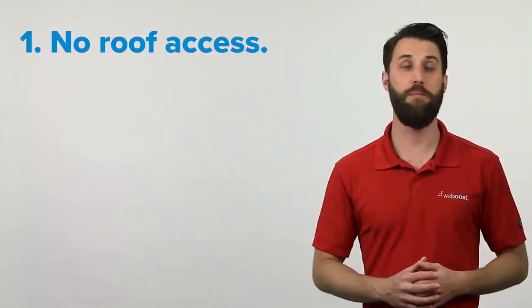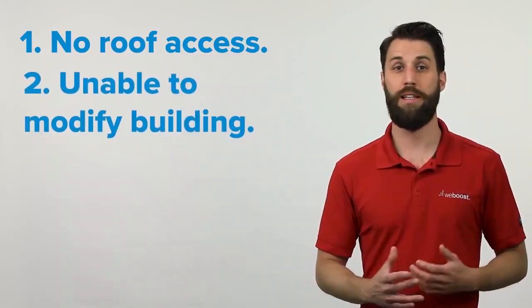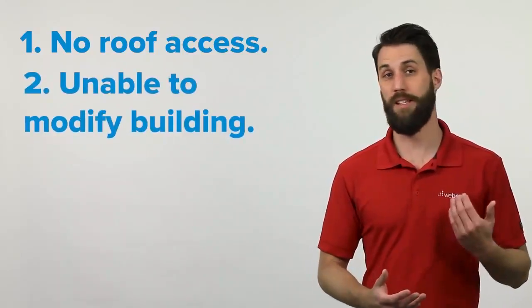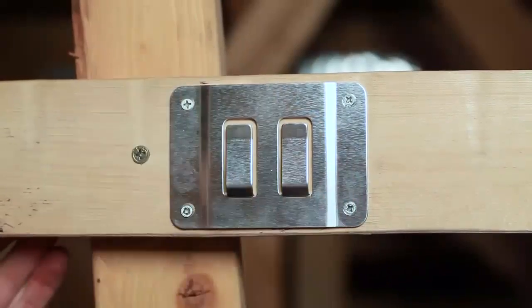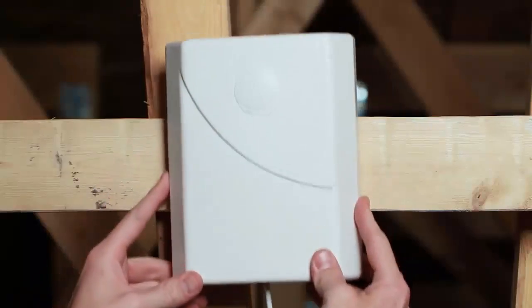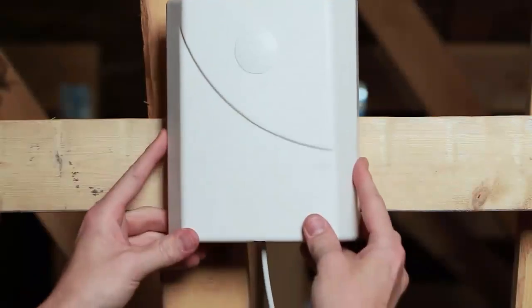Or if you're renting and can't make permanent alterations to the house, like installing a pole to mount the outside antenna there. Mounting it in the rafters is a semi-permanent installation and allows you to take the antenna with you when you leave.